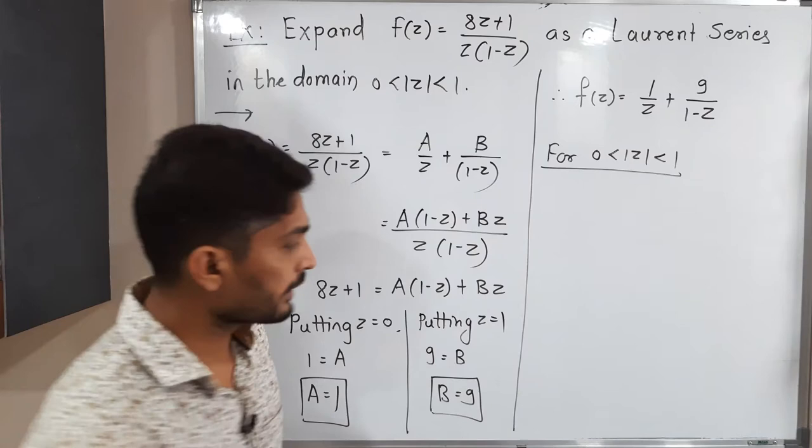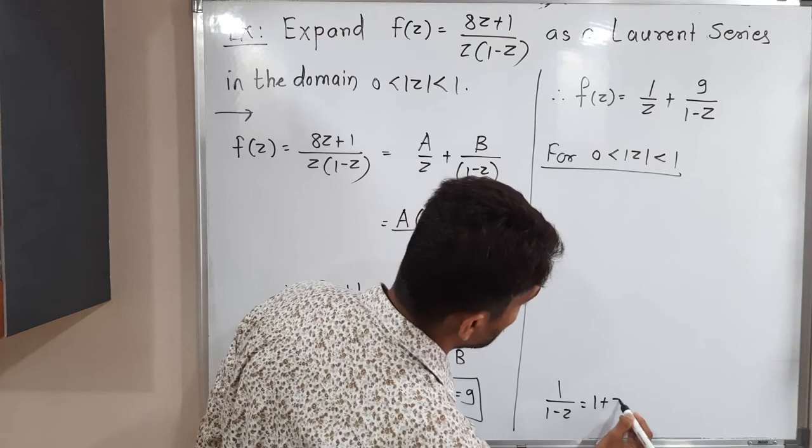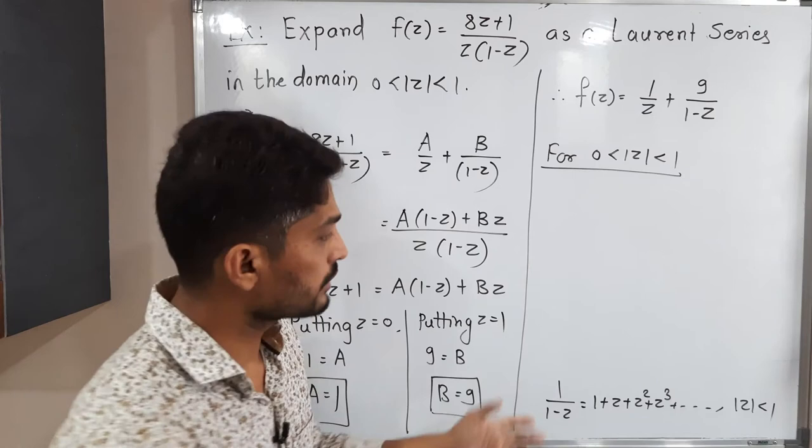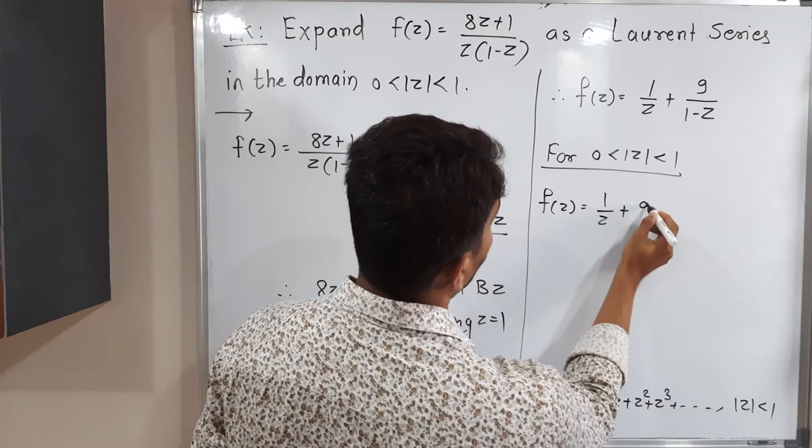That means 1 by z I will not disturb. Simply, we have to focus on this one. For that, we have the series. 1 upon 1 minus z is 1 plus z plus z square plus z cube and so on, but the condition is mod z should be less than 1. And that condition is also satisfied here by the given condition. This condition is already provided to us.